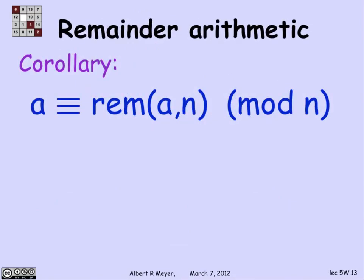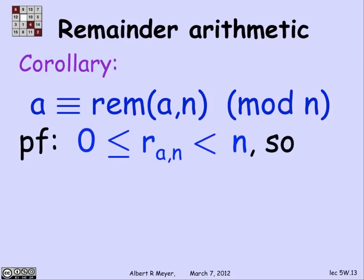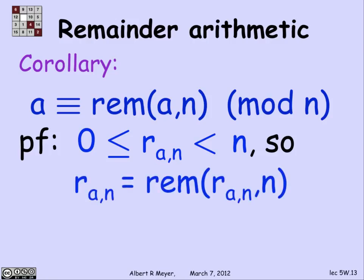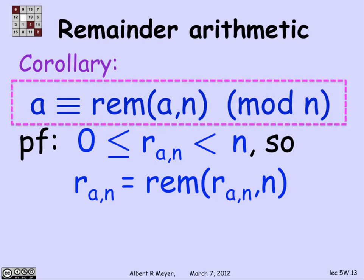Another simple consequence is a technical but enormously useful result: a number is congruent to its own remainder modulo n. The proof is easy — we show that A and its remainder have the same remainder when divided by n. The remainder of A divided by n is itself some value r. Taking the remainder of r mod n gives r again, since r is already in the interval from 0 to n minus 1. This corollary is the basis of remainder arithmetic, allowing us to replace numbers by their remainders to keep numbers small.